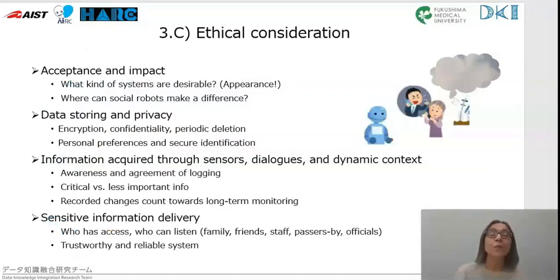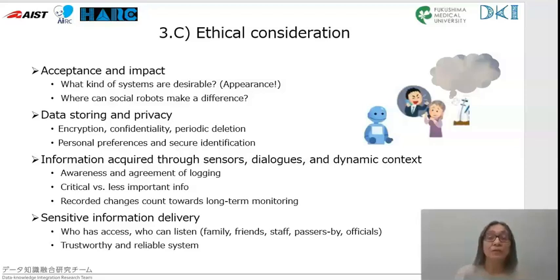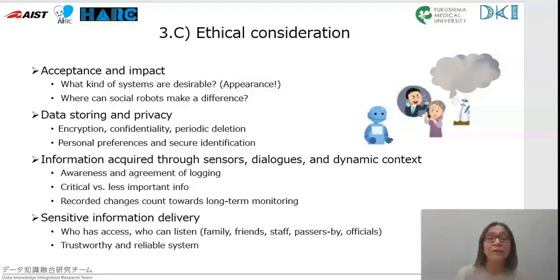When developing systems to assist, monitor, and support patients in living independently, many ethical and social issues need to be considered. The first questions concern the acceptance and impact of the robot systems — what kinds of systems are desirable, and where can social robots make a difference? Development needs to engage not only engineers, but the whole community: patients, medical personnel, family, friends, and society. Data storage and privacy issues are also important, including encryption, confidentiality, and length of storing, with pros and cons of privacy and secure identification needing to be balanced.